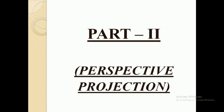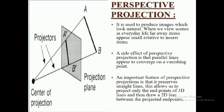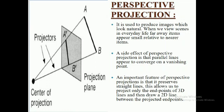Now the second part of our division — perspective projection. Perspective projection is used to produce images which look natural. When we view scenes in everyday life, far away items appear small relative to nearer items. A side effect of perspective projection is that parallel lines appear to converge on a vanishing point. AB is the three-dimensional object projected on a projection plane, intersected at a point known as the center of projection, giving us the object as A'B'. An important feature is that perspective projection preserves straight lines, allowing us to project only the end points of 3D lines and draw a 2D line between the projected end points.